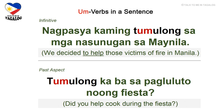Infinitive: nagpasya kaming tumulong sa mga nasunugan sa Maynila. Nagpasya means decided, kami is we, tumulong is to help, and nasunugan is fire victims — we decided to help the fire victims in Manila. Past aspect: tumulong ka ba sa pagluluto noong fiesta? Tumulong means helped, pagluluto means cooking or food preparation, and noong is during — did you help cook during the fiesta?